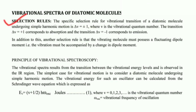First, we will see the selection rules. The specific selection rule for vibrational transition of a diatomic molecule undergoing simple harmonic motion is delta V equals plus or minus one, where V is the vibrational quantum number. The transition delta V equals plus one corresponds to absorption, and delta V equals minus one corresponds to emission.